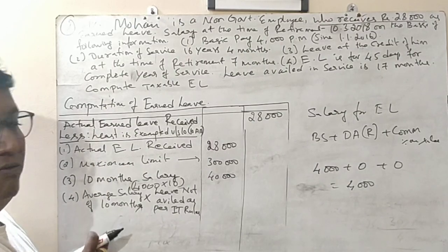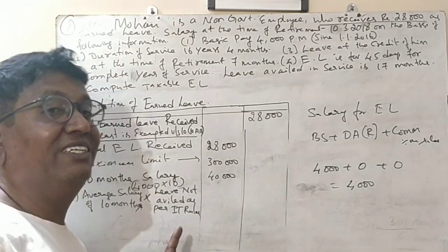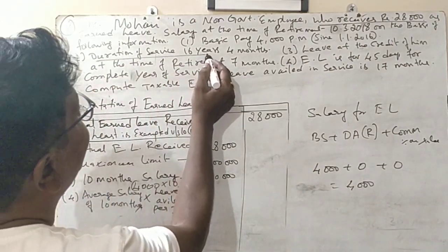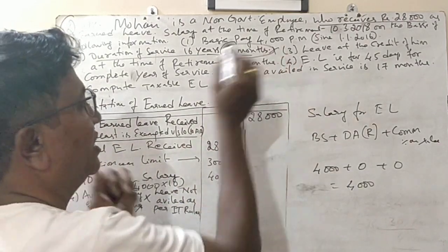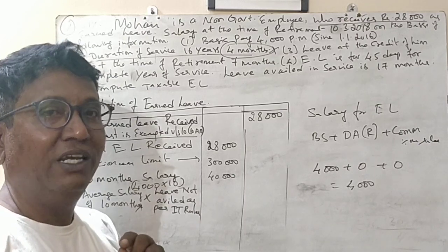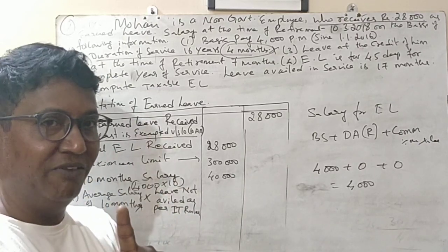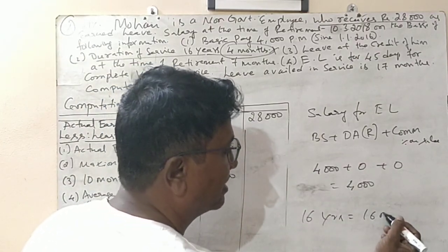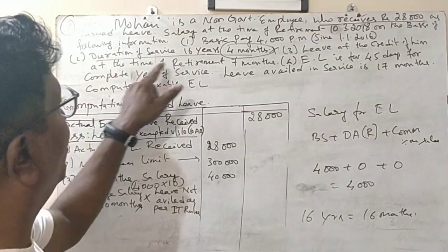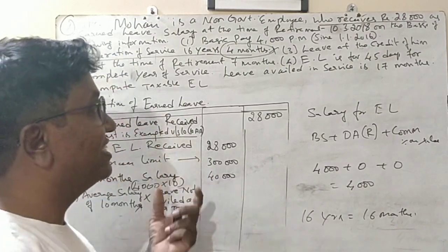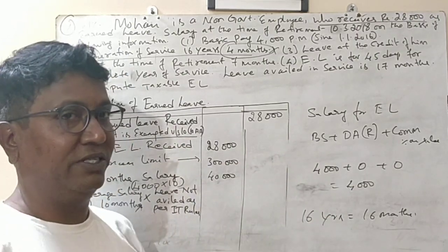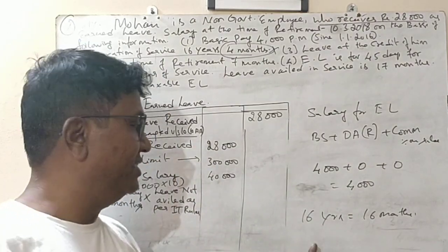For the fourth point, we need to find leaves not availed as per IT rules. Duration of service is 16 years and 4 months — we ignore the 4 months fraction. As per IT rules, for 16 completed years, you get 16 months of leave. Now, the leave at the credit of him at the time of retirement is 7 months as per the company. But that is as per the company, not as per the IT rules.